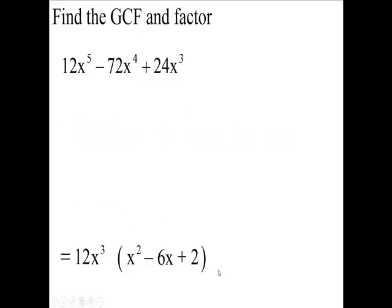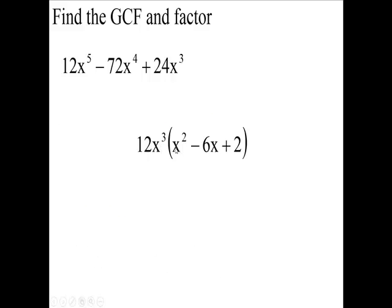So your final answer is the greatest common factor is 12x cubed. And you have x squared minus 6x plus 2 left over. So we factored that.